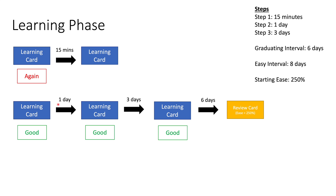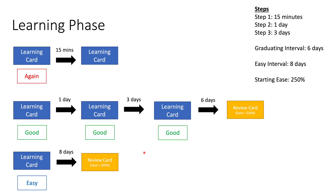Let's start the process over, but pretend instead of hitting Good the very first time, this card is super easy and you don't need to go through all the learning steps. You just want to graduate it immediately — so you hit Easy. For example, the card asks 'what's the color of the sky?' and you know it's blue — that's a super simple card. In that case, the card will immediately graduate and become a review card. How much time passes before you see it again as a review card is determined by your easy interval setting. We set ours to eight days, so you hit Easy and eight days later you'll see the card again, but this time as a graduated review card with ease associated with it.